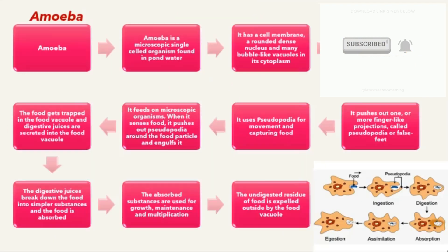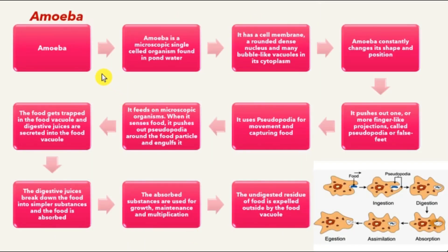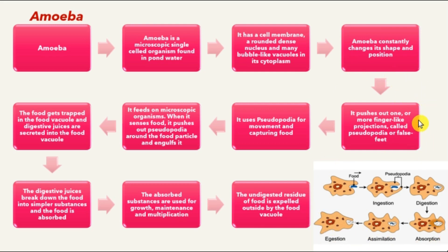We have learned about organisms which have a digestive system, but what about single-celled organisms? Amoeba is a really interesting microscopic single-celled organism found in pond water. It has a cell membrane around a dense nucleus and many bubble-like vacuoles in its cytoplasm. Amoeba constantly changes its shape and position by pushing out one or more finger-like projections called pseudopodia, also known as false feet, which it uses for movement and capturing food.